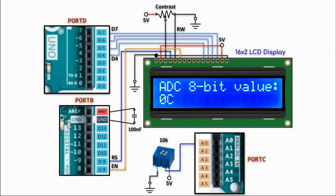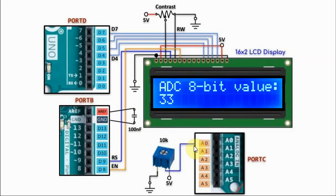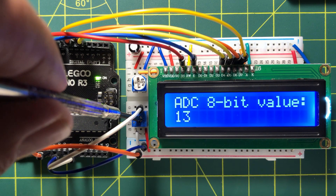The system implemented in this video has the LCD display interfaced with the UNO, where the four data lines are connected to four digital pins of port D. The two control lines — register select and enable — are connected to two digital pins of port B. A 10k potentiometer is connected to pin PC0 of port C.